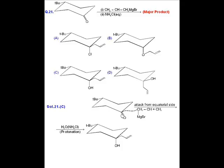So answer is C. Question number 21 is about attack of Grignard reagent on cyclohexanone in which at position number 4 a bulky group is present. So attack takes place from equatorial side and the product is formed in which the OH group lies in the axial position and the incoming alkyl group lies in the equatorial position.